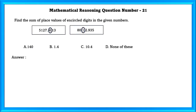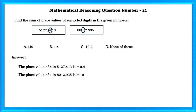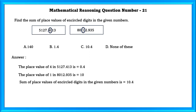Mathematical reasoning question number 21. Find the sum of place values of the underlined digits in the given numbers. The place value of 4 in the first number is equal to 0.4. The place value of 1 in the second number is equal to 10. The sum of the place values of the underlined digits in the given numbers is equal to 10.4.